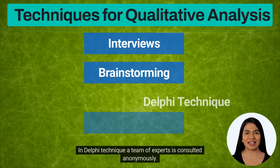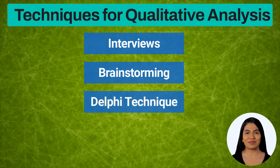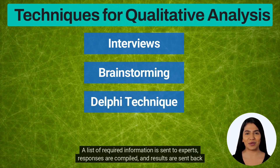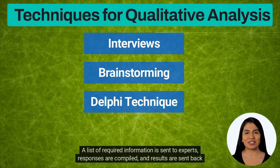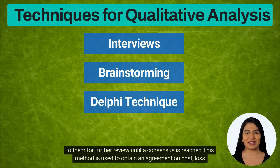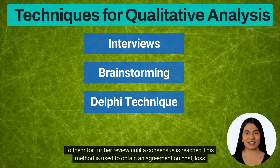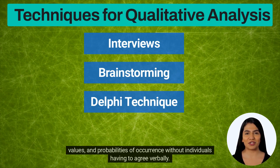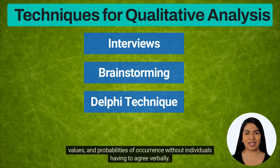In the Delphi Technique, a team of experts is consulted anonymously. A list of required information is sent to experts, responses are compiled, and results are sent back to them for further review until a consensus is reached. This method is used to obtain an agreement on cost, loss values, and probabilities of occurrence without individuals having to agree verbally.